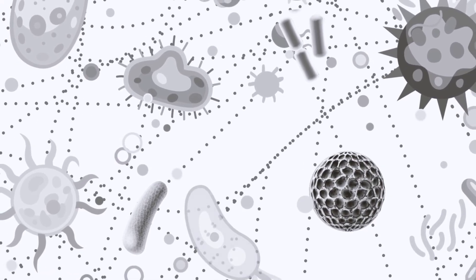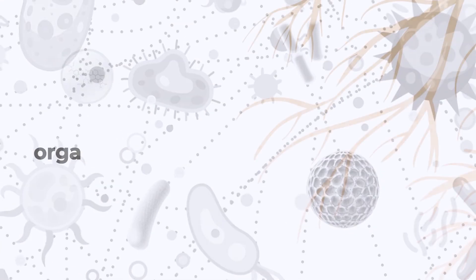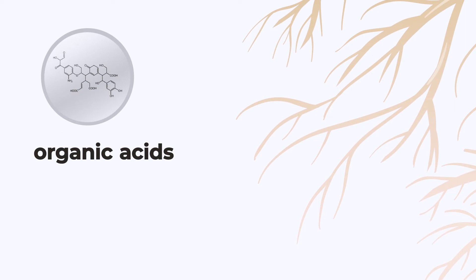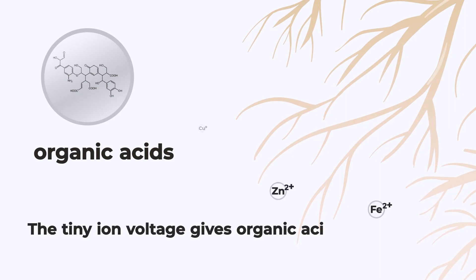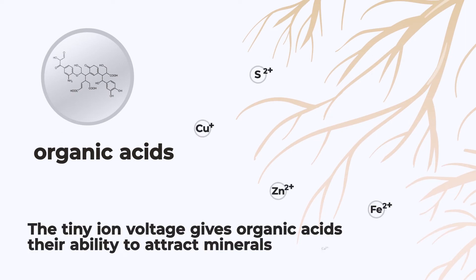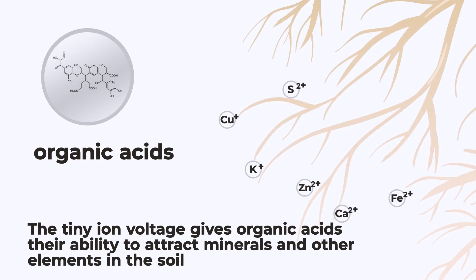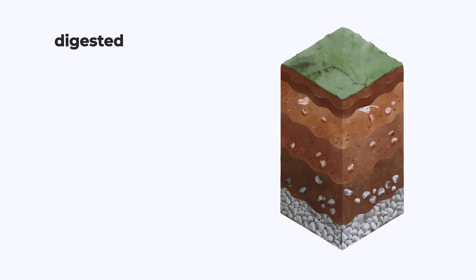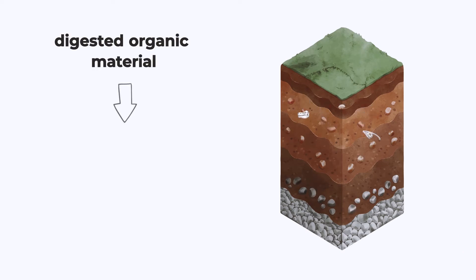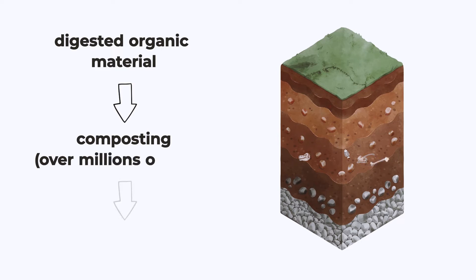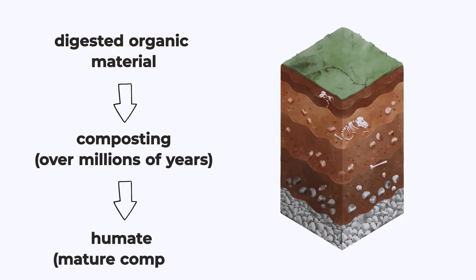For plants, this energy is in the form of organic acids. The tiny ion voltage gives organic acids their ability to attract minerals and other elements in the soil that plants can access through their root system. Decomposed organic plant material becomes compost, and then, if left undisturbed over millions of years, they eventually form into a humate.